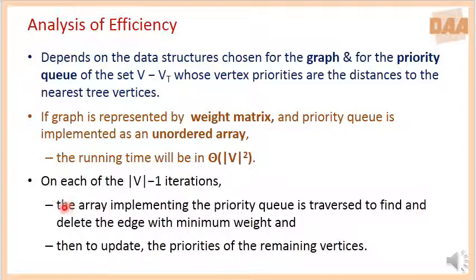At each iteration, the array implementing the priority queue is traversed to find and delete the edge with the minimum weight, and then to update the priorities of the remaining vertices. All together, the algorithm complexity will be big theta of n square, where n is the total number of vertices.